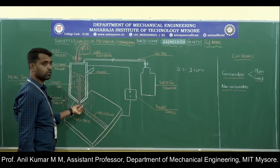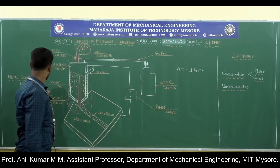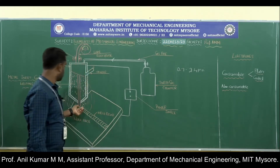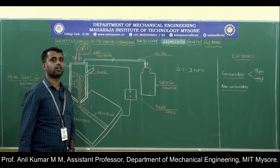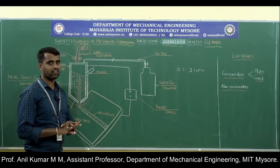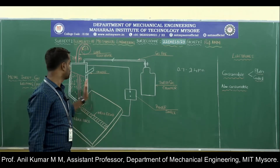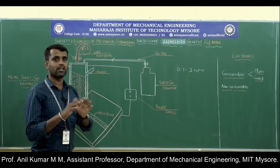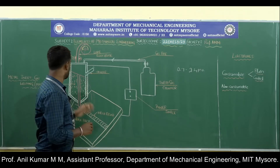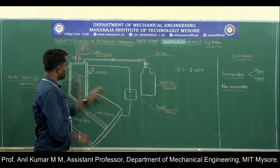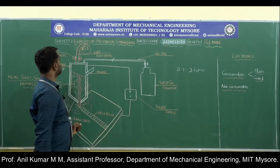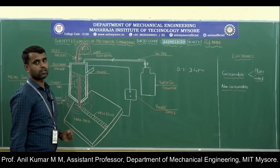The electrode is continuously consumed and forms the weld. Inert gases — commonly helium or argon — are supplied into the welding pool. Since no flux is used, the inert gases form a gaseous shield to protect the molten metal from oxygen in the atmosphere. AC or DC power source is also supplied. These are the main components of the metal inert gas welding process.